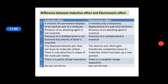Presence of attacking reagent is not essential in inductive effect, but it is essential in electromeric effect — only in presence of an attacking reagent is this effect observed. In inductive effect, presence of a multiple bond is not essential, but polarity of a bond is essential — there should be a difference in electronegativities of the atoms involved. But in electromeric effect, a multiple bond is essential because the shifting of pi electrons takes place.